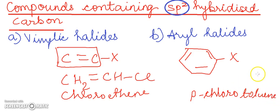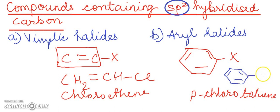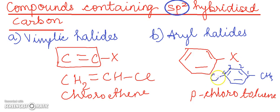The structure of para-chlorotoluene has a benzene ring with alternating double and single bonds, a methyl group for the toluene part, and a chlorine at the para position — which is the fourth position: 1, 2, 3, 4. So here you have the chlorine group. This is para-chlorotoluene, an example of a compound containing sp2 hybridized carbon.